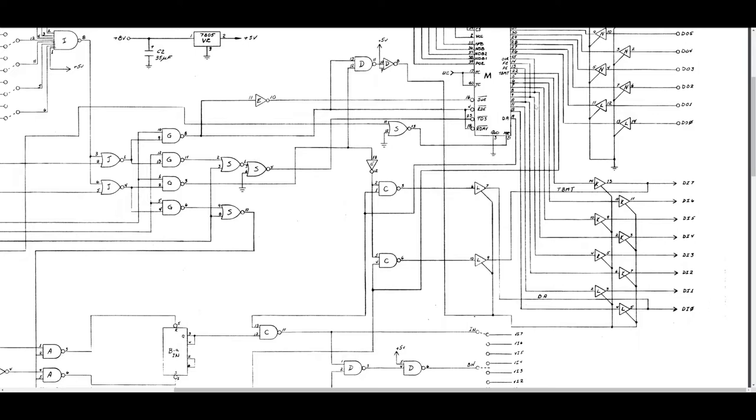The issue here is the TBMT signal. It's pin 22 on the UART. If we follow it around, same kind of path, it gets gated through here to the 74LS-367 and it gets output here on data input 7 on the bus.